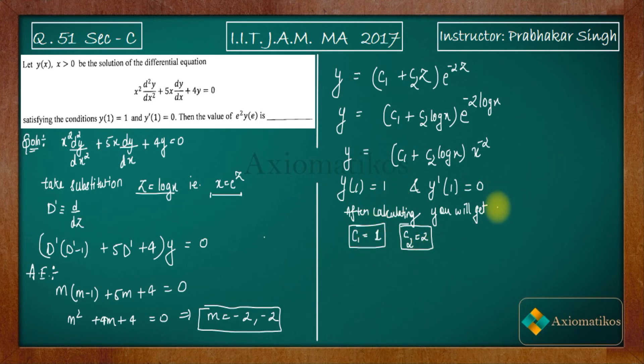Take this as an exercise to find c₁ and c₂. It is very easy, just use these two points. So what is our solution finally? It is (1 + 2 log x)x^(-2).